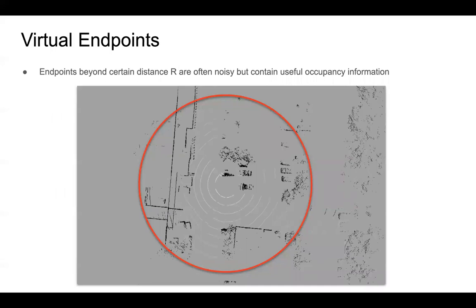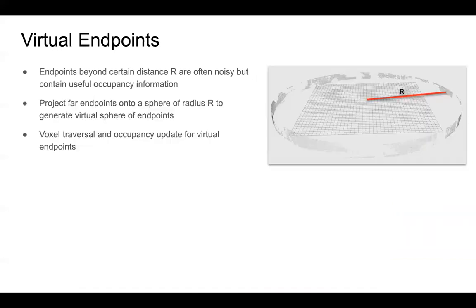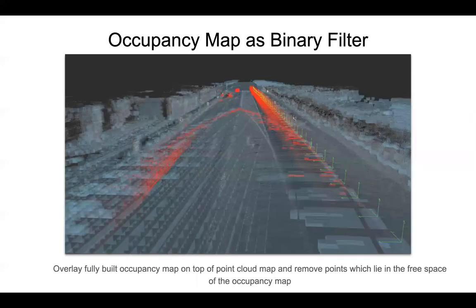Next, we introduce the concept of virtual endpoints. Endpoints which are far from the LiDAR are often noisy, so when mapping an outdoor space, it is useful to trim the input point cloud. However, by removing these points, we lose valuable occupancy information. For example, endpoints lying in the blue rectangle are far from the sensor but contain useful occupancy information. To solve this, we project the endpoints with distance greater than R onto a virtual sphere of radius R centered at the sensor origin. We then perform voxel traversal for the projected endpoints and decrease the occupancy probability of all voxels along the rays, including the endpoint voxel. Finally, we superimpose the fully built occupancy map on the point cloud map and remove points which fall in the free space of the occupancy map.